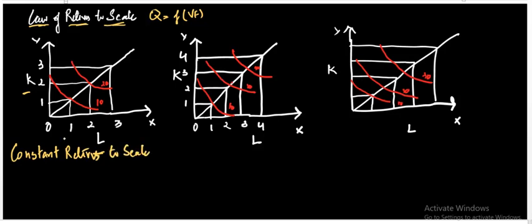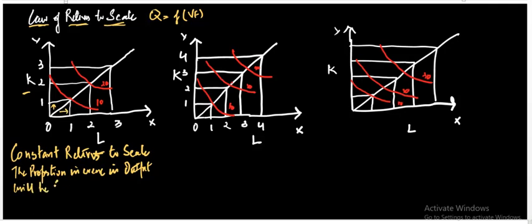Constant returns to scale means that when I employ one additional unit of labor, the production will increase in the same proportion. So the proportionate increase in output will be equal to the proportionate increase in factors of production.